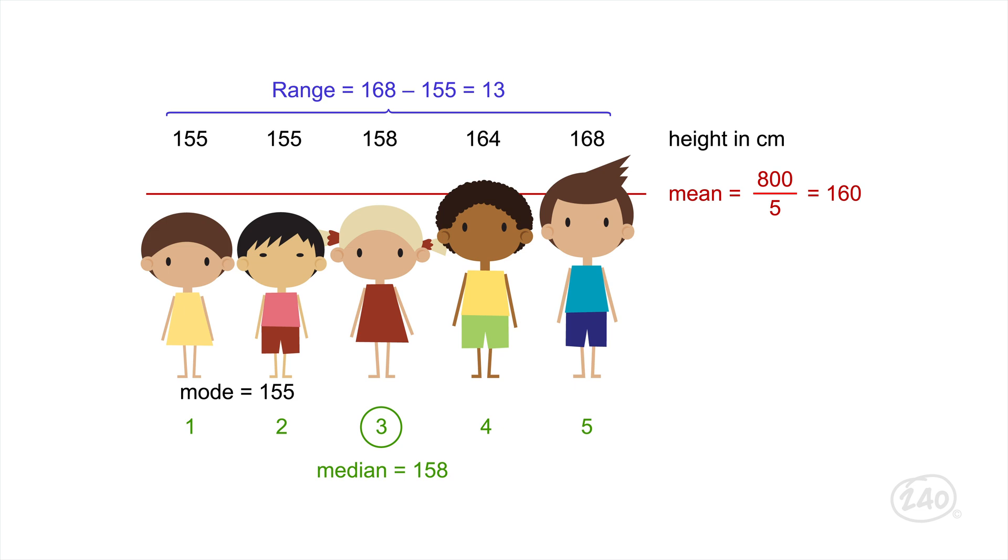Five students stand in a row. Their height measured in centimeters. So the dataset is 158, 155, 164, 155, and 168. Find the mean by adding up all of the numbers in the dataset and dividing by the number of numbers. That gives us 800 divided by 5, or 160 centimeters.